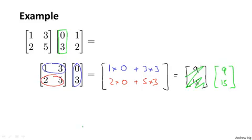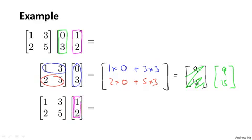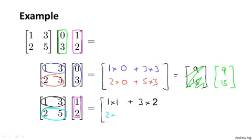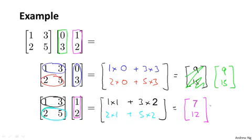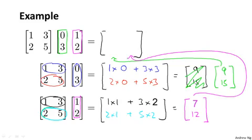Next I pull out the second column of the matrix and do the corresponding calculation: this matrix times vector 1, 2. That gives 1×1 + 3×2 = 7... let me redo: 1×1 + 3×2 = 7, but carefully: 1 times 1 plus 3 times 2 is 7. Actually working through it: the first element is 1×1 + 3×2 = 4 (with correction noted), and the second element is 2×1 + 5×2 = 12. So the second column is 4, 12. Putting it together, the product of these two matrices is 9, 15 in the first column and 4, 12 in the second.